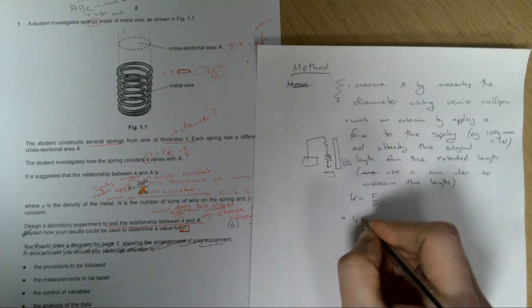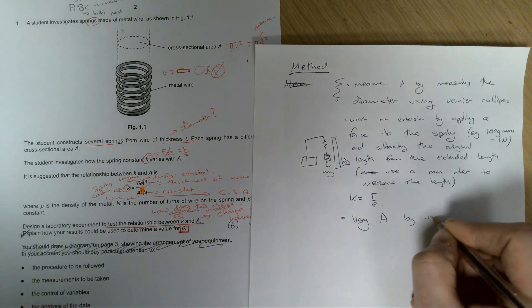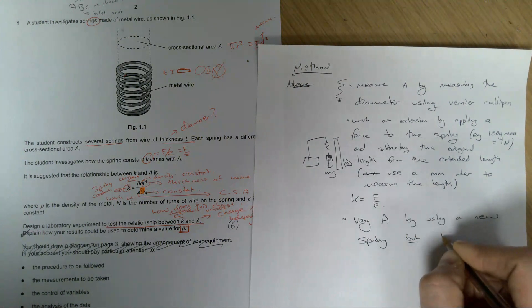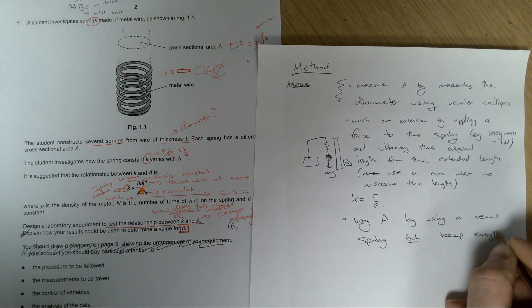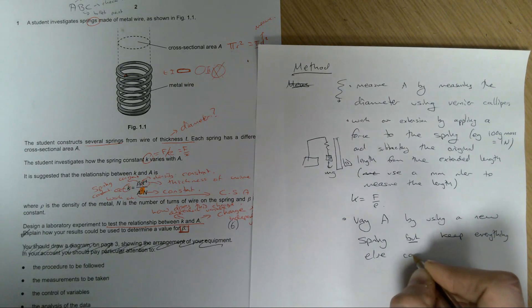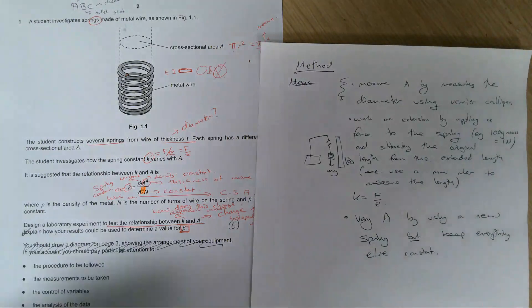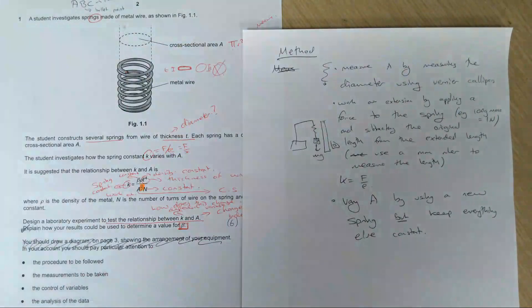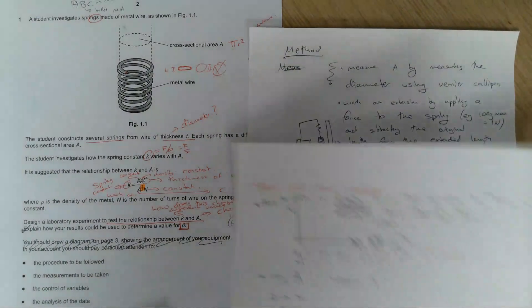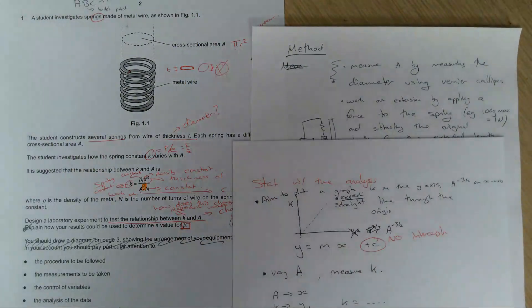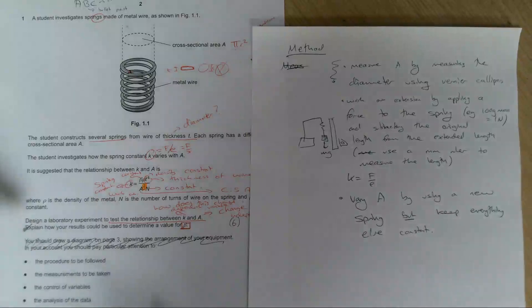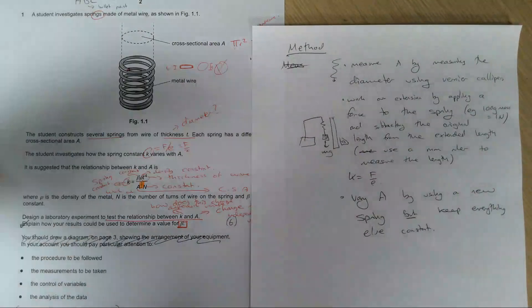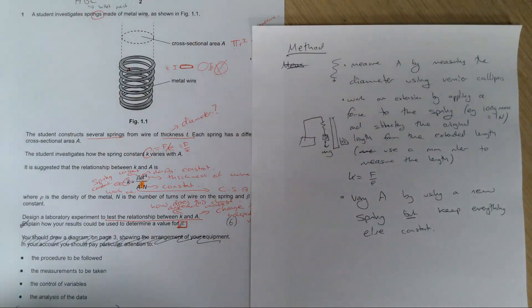Then k = F / extension. To vary A, use a new spring but keep everything else constant — same material (constant density), same number of turns n, and same wire thickness t. If asked about safety: the spring could snap, so wear safety goggles; clamp the apparatus to the table and keep masses in the center.